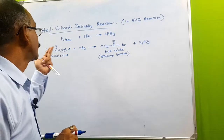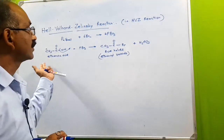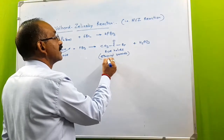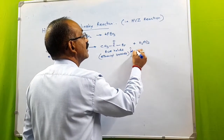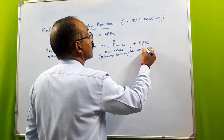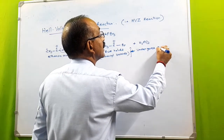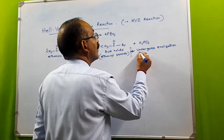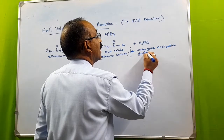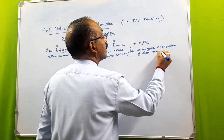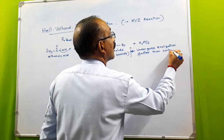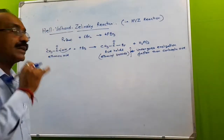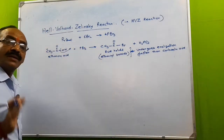Why do we need to convert the acid to the acid halide? The acid halide undergoes enolization at a higher rate — faster than carboxylic acid. That is why we convert the carboxylic acid to the acid halide first.